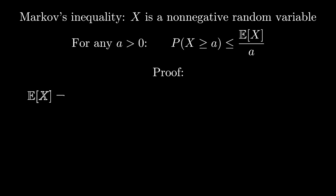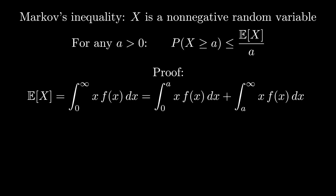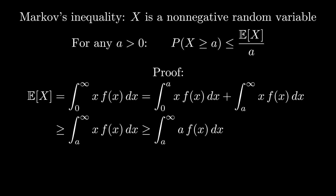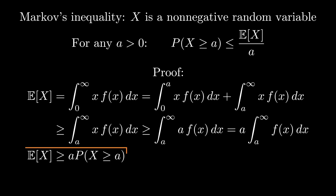To prove this, let's assume without loss of generality that x is a continuous random variable. We start by writing down the definition of the expectation. We can chop this integral up into two pieces: the first integral is from zero to a, and the second integral is from a to infinity. Note that the first integral must be non-negative because it integrates over the product of non-negative functions. So we can think of the second integral as being a lower bound for the expectation of x. Now we know, since the lower limit of integration is a, we could replace x with a and get another lower bound. a is just a constant, so it can come out of the integral. Now we recognize that integral as being the probability of the event that x takes a value greater than or equal to a. And we're done — there's Markov's inequality.